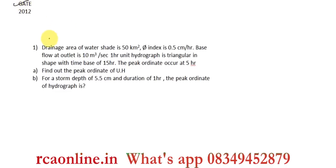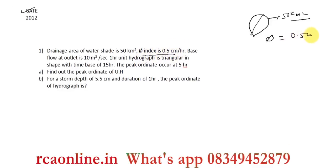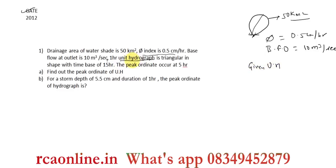This is a GATE 2012 question based on unit hydrograph. The drainage area of a watershed is 50 square kilometers. The phi-index (infiltration loss) is 0.5 centimeters per hour. Base flow at the outlet is 10 cubic meters per second — a fixed discharge value. The 1-hour unit hydrograph is triangular in shape. Since unit hydrograph is given, we are at the fourth step of the process flow diagram.